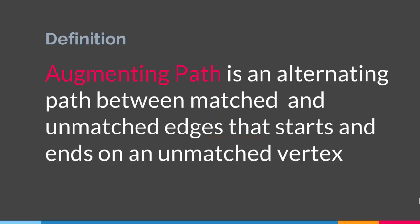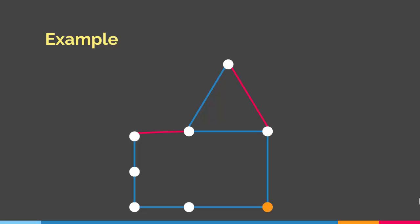An augmenting path is an alternating path between matched and unmatched edges that starts and ends on an unmatched vertex. So let's say we have a graph like this and we start on this particular vertex, then we go up and end it right there. This is an augmenting path because we have started and ended on two different unmatched vertices and our path is alternating between unmatched and matched edges. Therefore this is an augmenting path.